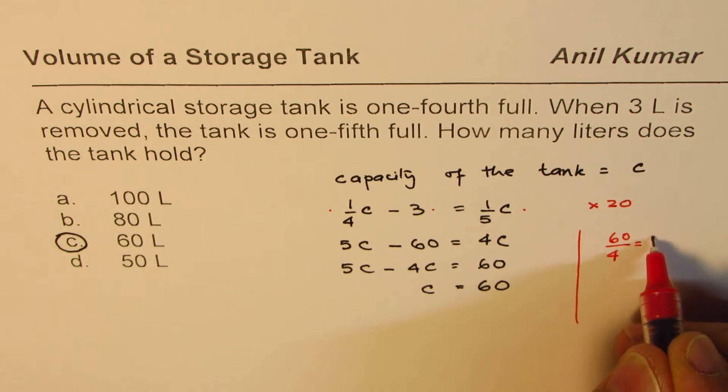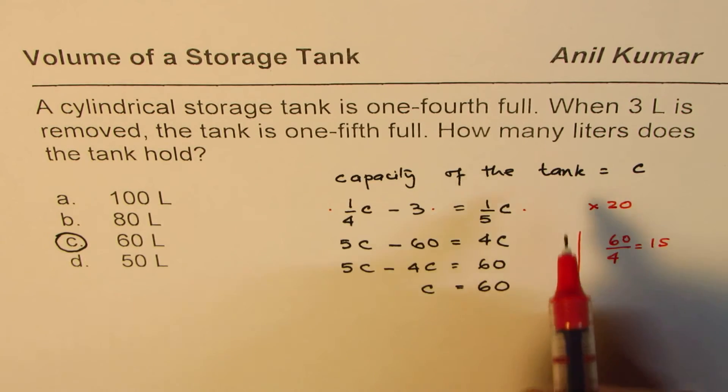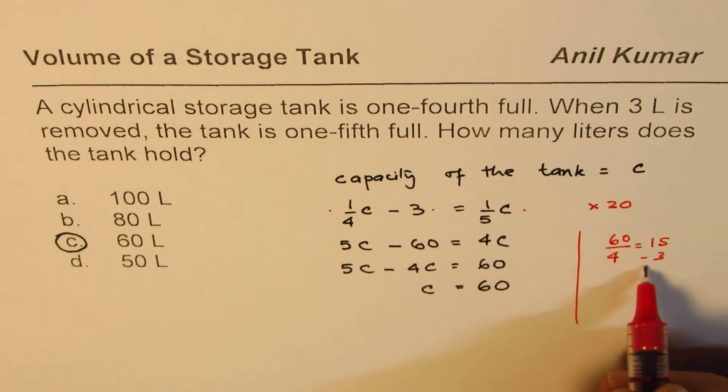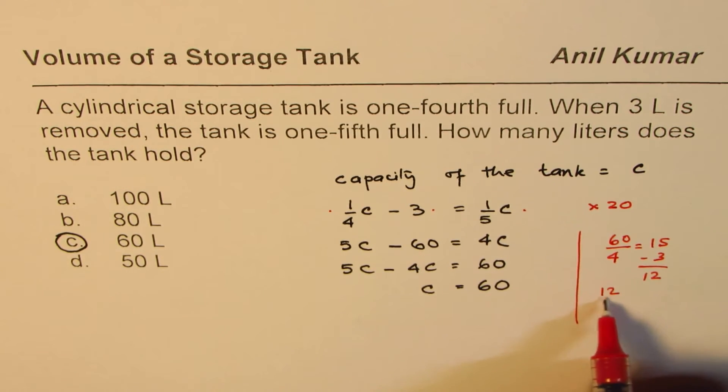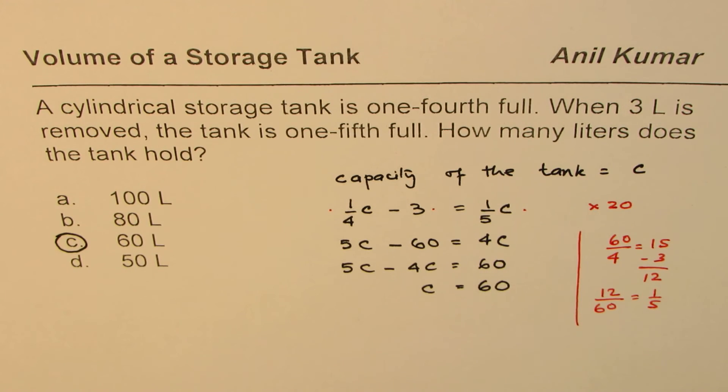Now if you take away 3, you get 12. Now 12 out of 60 is indeed one-fifth. So that is how you can check your solution. I'm Anil Kumar and I hope that helps. Thank you and all the best.